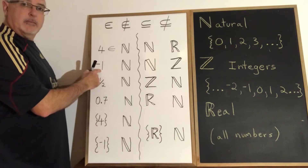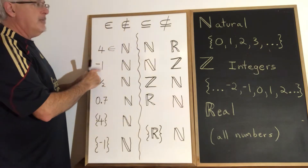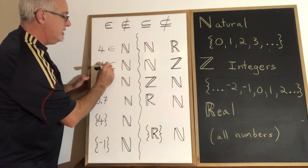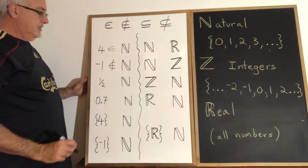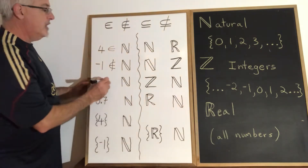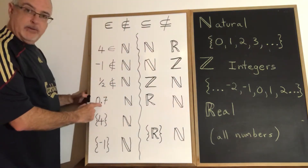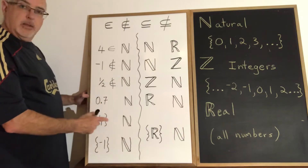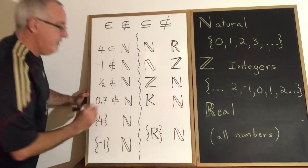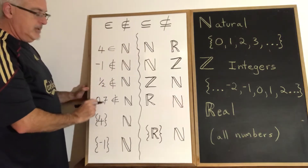Negative one is not a set, so I'm using one of the element symbols. Negative numbers are not part of natural numbers, so negative one is not an element of natural numbers. One half is a fraction — there are no fractions in natural numbers, so one half is also not an element of natural numbers. Zero point seven is a decimal between whole numbers and is not part of natural numbers, so zero point seven is not an element of natural numbers. None of these are presented as sets, so I don't need the subset symbols.